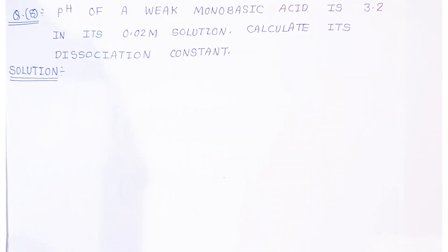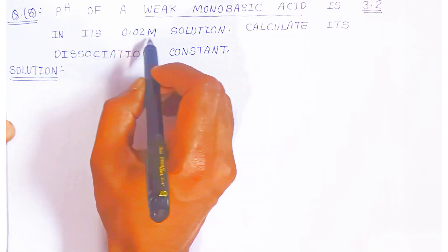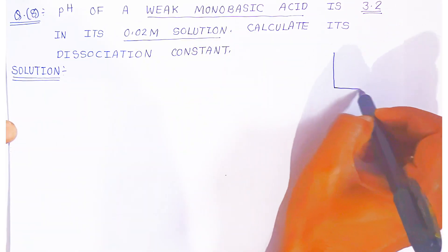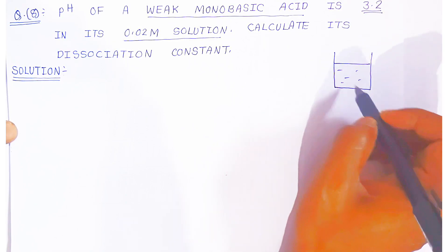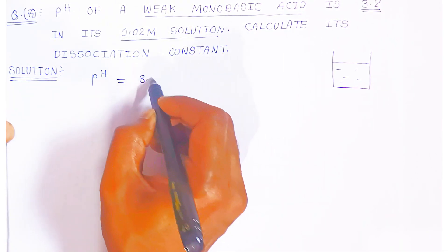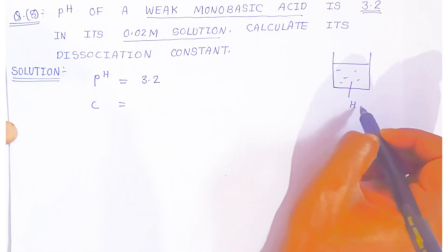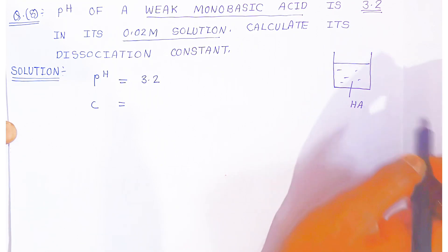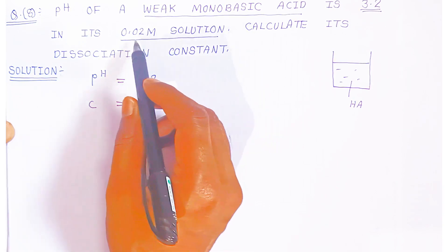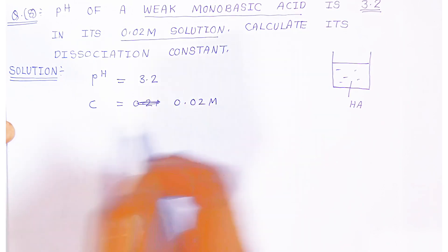Hello students, once again welcome to Bholanath Academy. In this video we are going to see question number 8: the pH of a weak monobasic acid is 3.2, and it is a 0.02 molar solution. Since it is monobasic, we can write it as HA — that means one proton, one anion. The concentration is 0.02 molar.